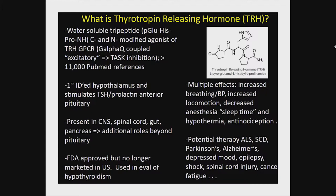TRH is a heavily studied area with over 11,000 PubMed references. It was first identified in the hypothalamus of livestock animals and stimulates TSH and prolactin secretion in the anterior pituitary — an important endocrine role. But it's also present throughout the CNS, spinal cord, gut, and pancreas, suggesting additional roles. It's an FDA-approved compound, though no longer marketed in the United States — previously used by endocrinologists in evaluation of hypothyroidism.